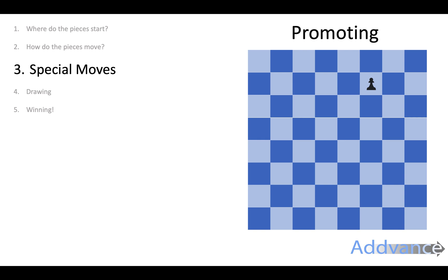Promoting: when pawns reach the other side of the board, they are promoted and rewarded for reaching the other side. You can promote them to a queen, a bishop, a rook or a knight. Normally, you would just choose a queen.